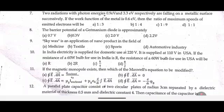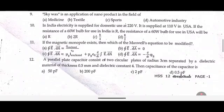Tenth one: In India, electricity is supplied for domestic use at 220 V. It is supplied at 120 V in the USA. If the resistance of a 60-watt bulb for use in India is R, the resistance of the 60-watt bulb for use in the USA will be dash.